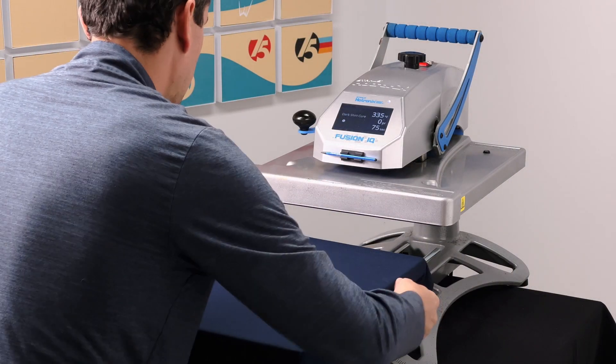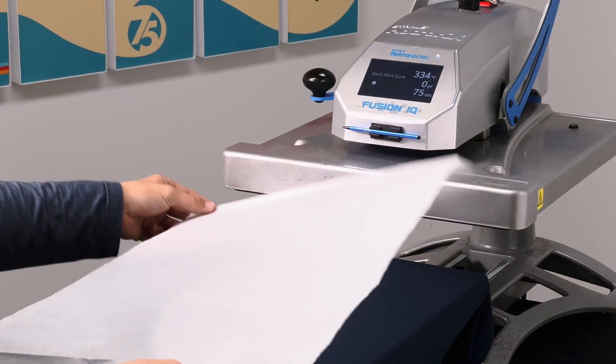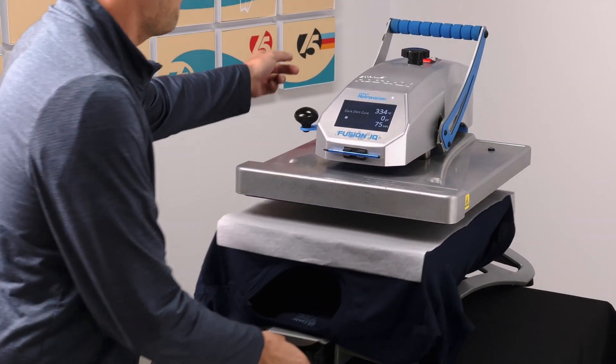Take your garment and thread it onto the heat press. Apply a sheet of parchment paper and press for about 20 seconds.